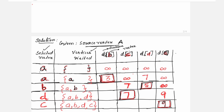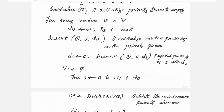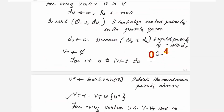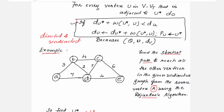Selected vertices B, D, and C each get included in the visited vertices. These steps are carried out from i = 0 to V - 1, processing all vertices in the graph — in this case, 5 vertices.